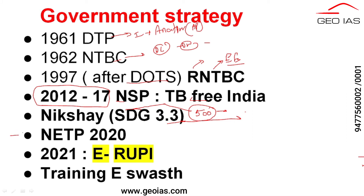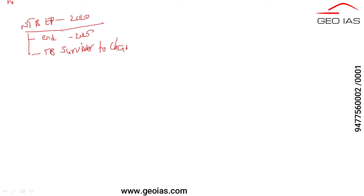With high spirit, in 2020, they decided to launch the National TB Elimination Program 2020. This is one of the recent updates in Government of India's policy. The program aims to end TB by 2025 and also launched a TB Survivor to Champion program.